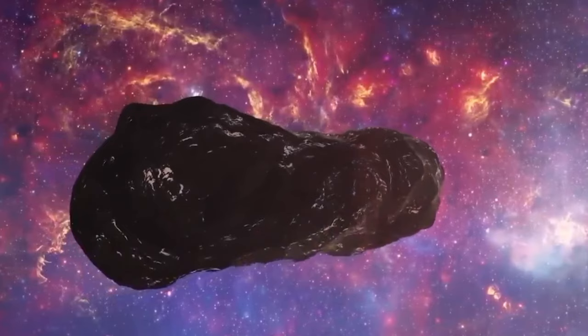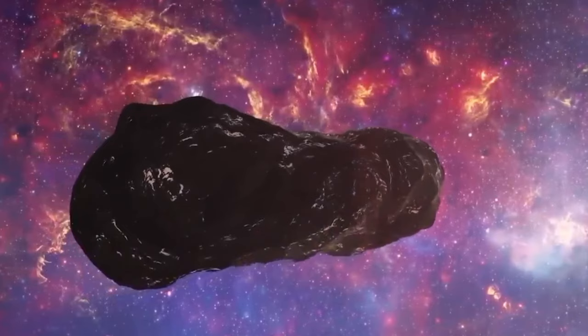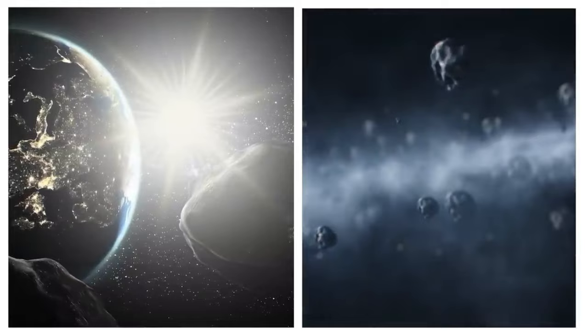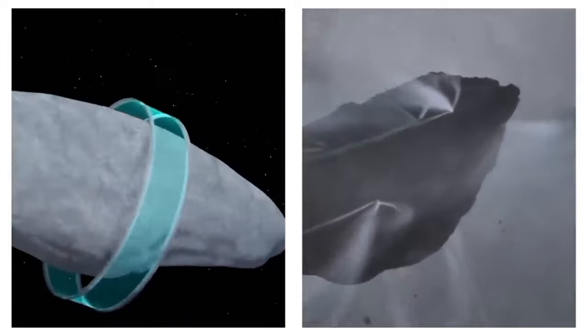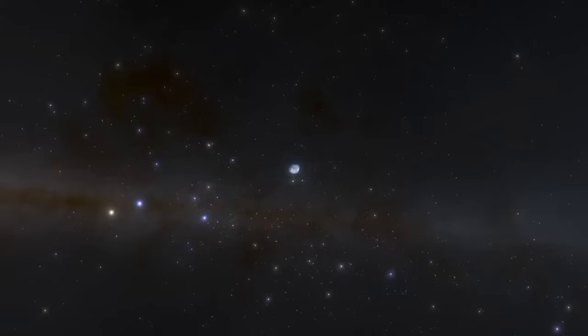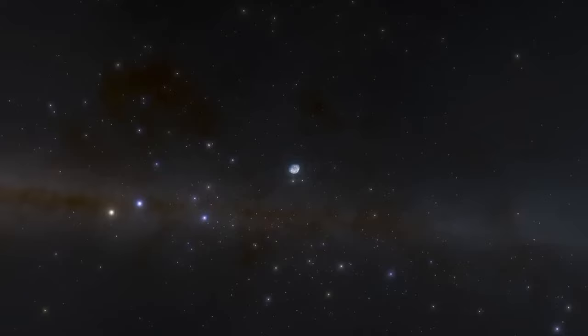Oumuamua is a small object, maybe 100 to 1,000 meters long and 35 to 167 meters wide, with a red color like things in the outer parts of our solar system. Even though it got close to the sun, it didn't have the usual fuzzy cloud around it that comets usually do. It spins like other rocks in our solar system, but it's shaped in a way that's different from most things we've seen. It doesn't belong to any of our known planetary systems, and we're not sure how old it is or where it came from. Most scientists think Oumuamua is a natural thing, but we didn't get to study it for very long. So we're not entirely sure. It might be made of rock like asteroids or have some ice like comets. Some think it might be what's left of a comet that broke apart, or maybe a chunk of a faraway planet with lots of frozen stuff on it, similar to Pluto.